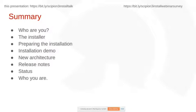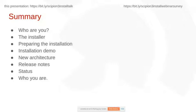In summary: I want to know who you are, then I'll talk about the installer we've prepared to make things easier. I'll talk about preparing the installation — there are a few things you need to prepare before using the installer. Then I will demo two cases: one with Ubuntu 20 and conda, and the other with CentOS 8 and virtualenv. I'll describe the new architecture of Scipion, the release notes, and the status of the code.